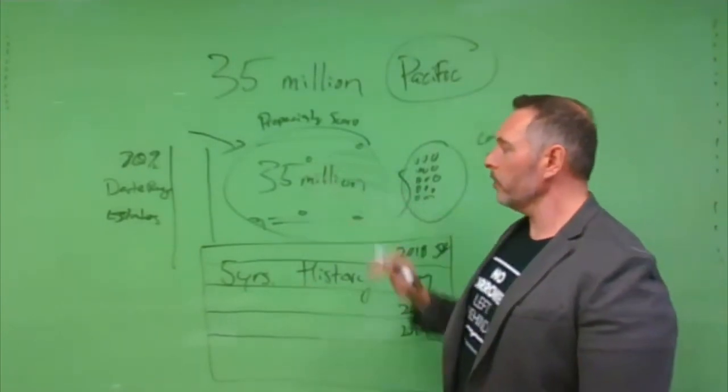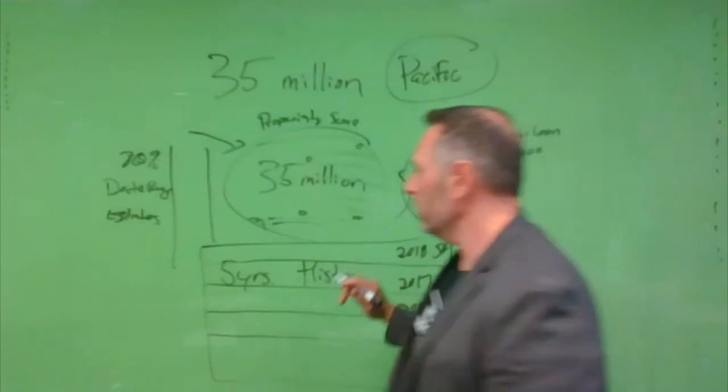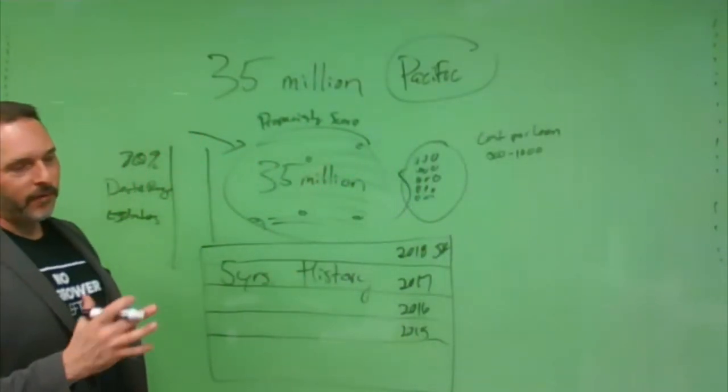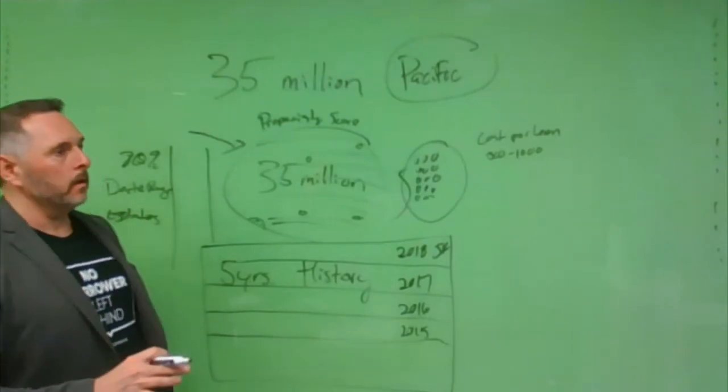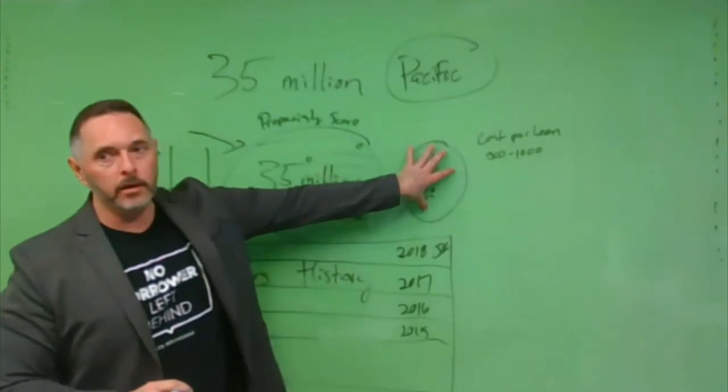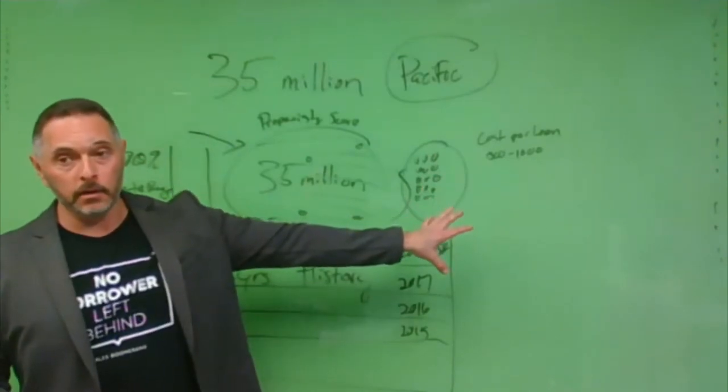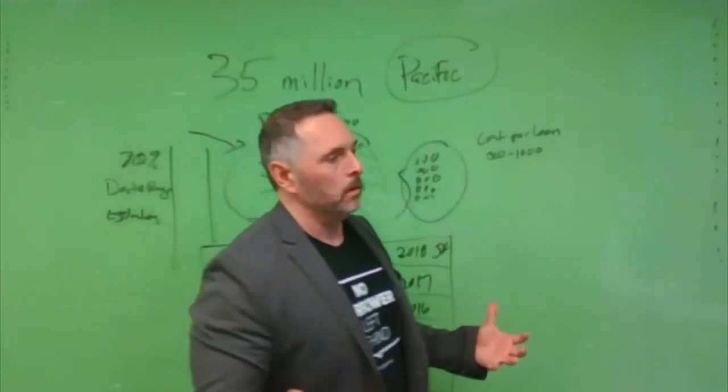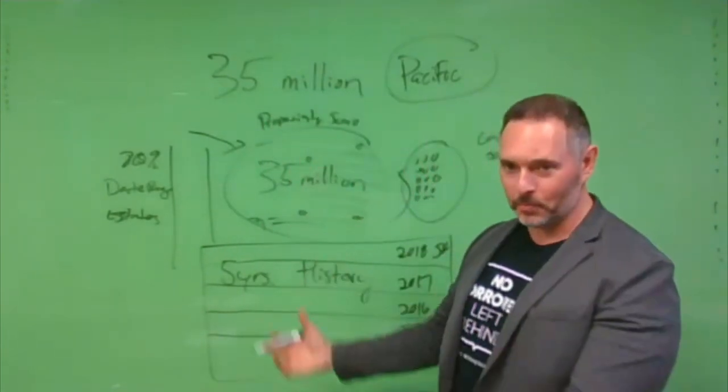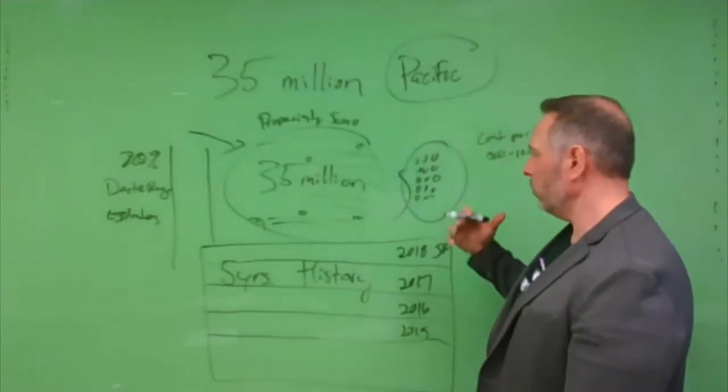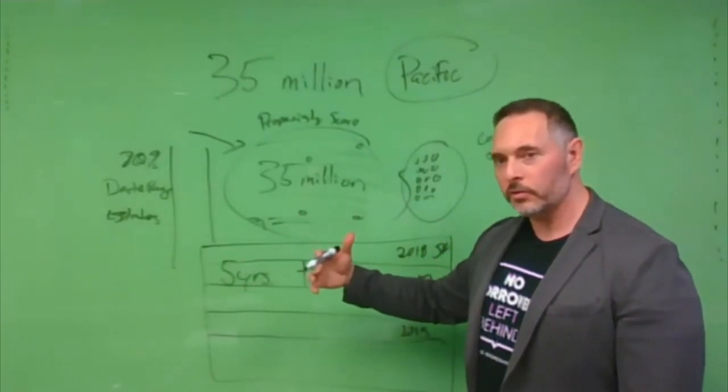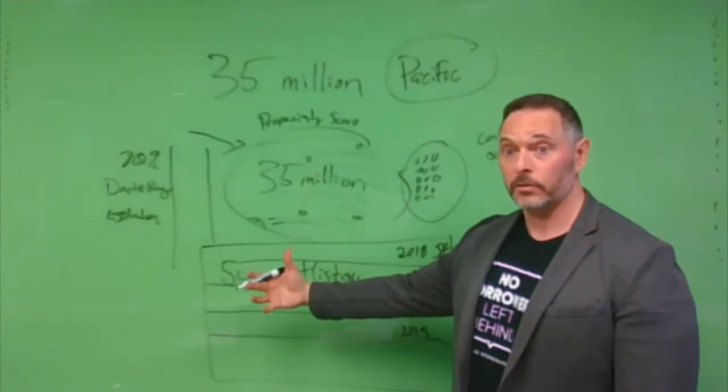So what this means to you is a cost for a closed loan between $500 and $1,000 versus double to triple that in the gubby space. So our conversion rate, to give you an idea, in the government space is about five to six percent. In the conventional space, using this method, we see a 15 percent or better conversion, which means with the same amount of money spent, even if it was the same amount of phone calls, you would produce two to three times the loans.